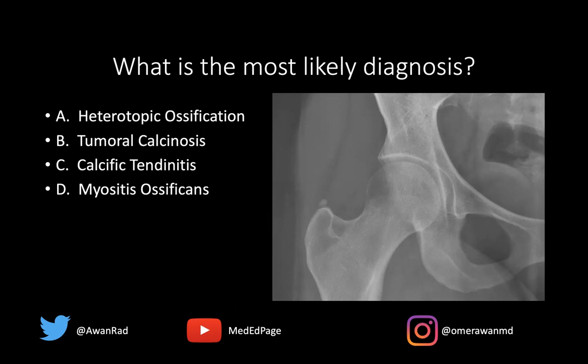This is, of course, a case of calcific tendinitis. If we take a look here, we have a globular amorphous calcification adjacent to the greater trochanter.